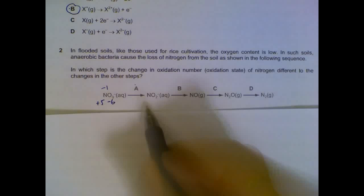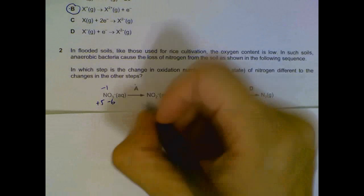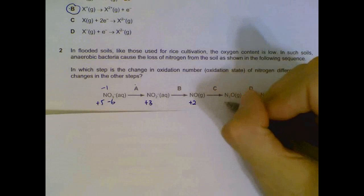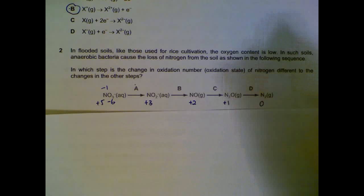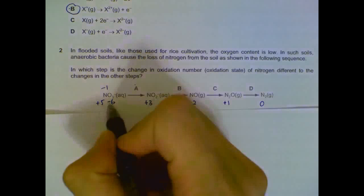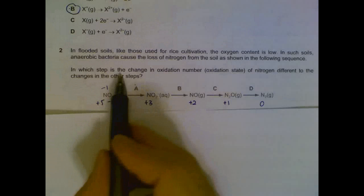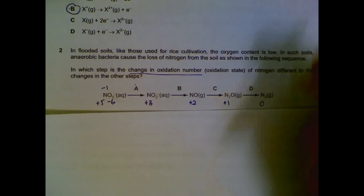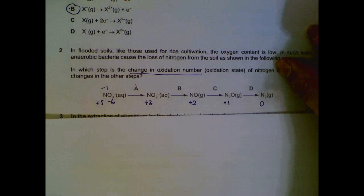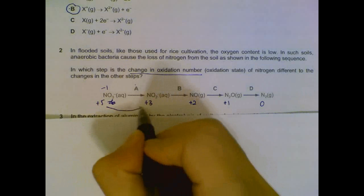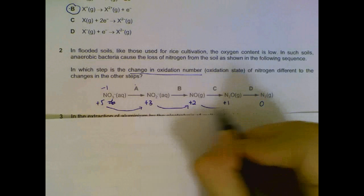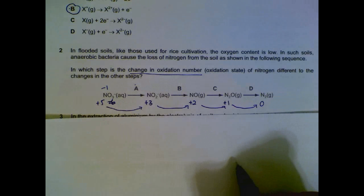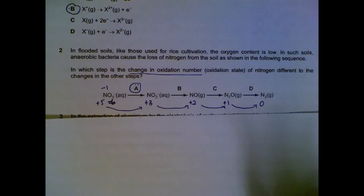Following that rule, the respective oxidation states of nitrogen are plus 5, plus 3, plus 2, plus 1, and one element will be zero. They want to know in which step the change in oxidation state is different from the others. The change here is 2 units, then 1 unit, 1 unit, 1 unit. So A has a different change — a change of 2 units compared to the rest with 1 unit. So A is the answer.